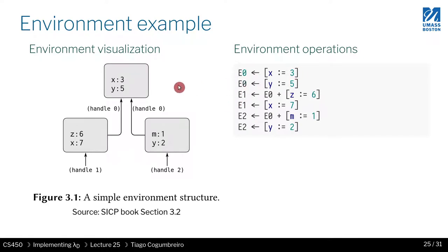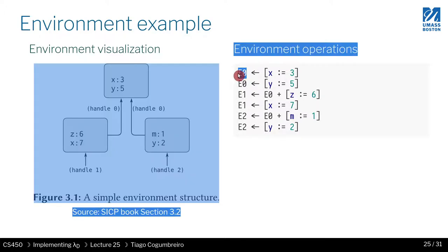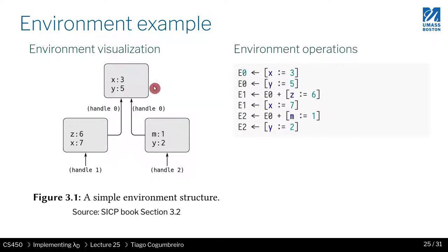First, assuming the memory is empty with an initial environment at E0, we set X assigned to 3, assign Y to 5, then create handle H1, which creates this box initialized with Z assigned to 6.